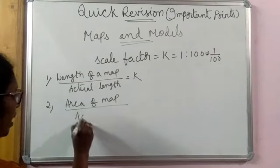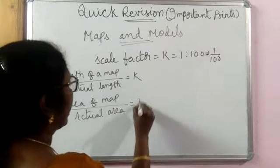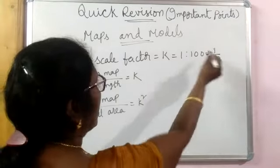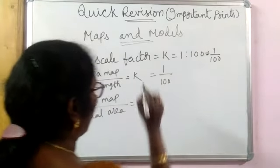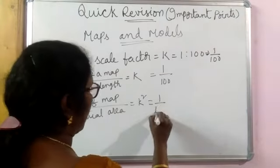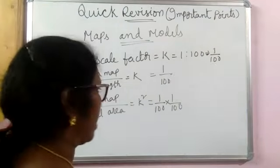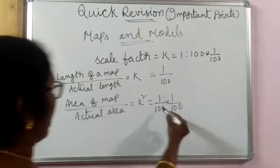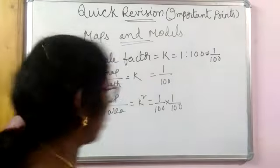By actual area is K square. That means if it is 1 by 100, you will have 1 by 100 into 1 by 100. So actual area will be 100 into 100 into area of the map. Okay?